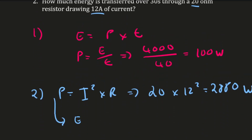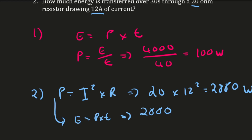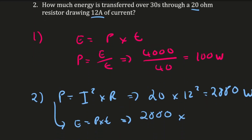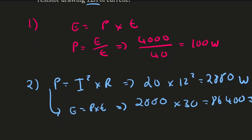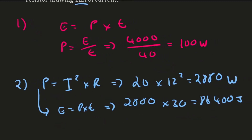Then use E = Pt: energy transferred = 2,880 watts × 30 seconds = 86,400 joules. Hopefully you got those correct — see you in the next one.